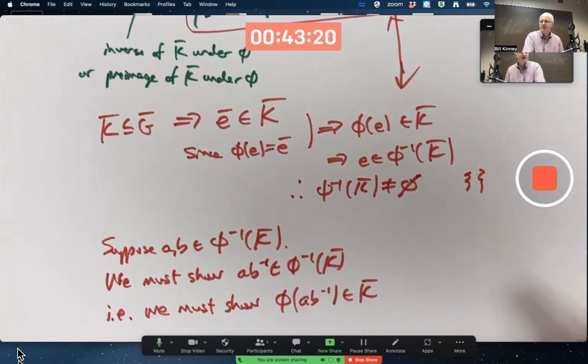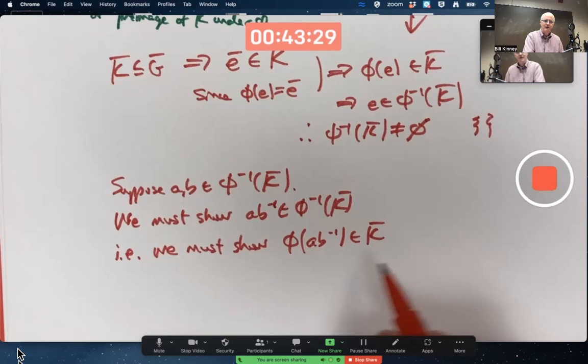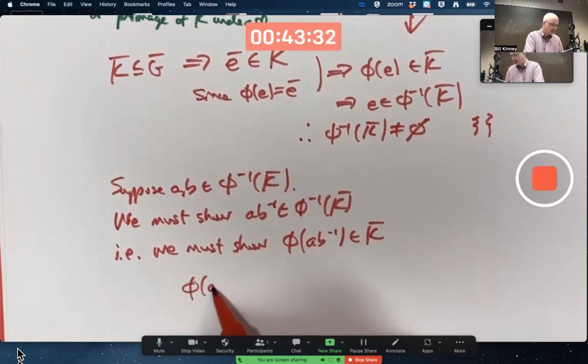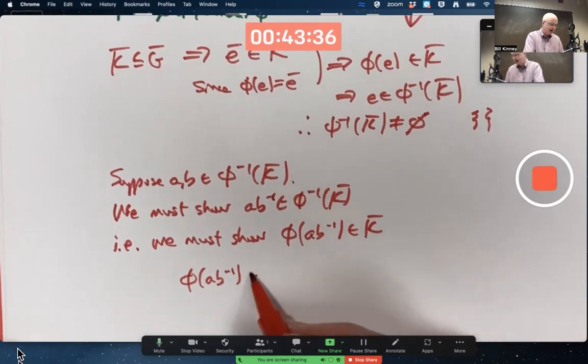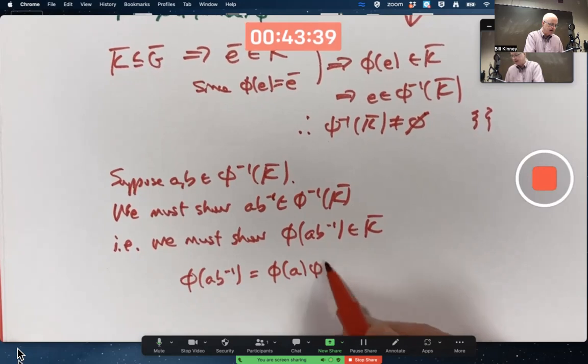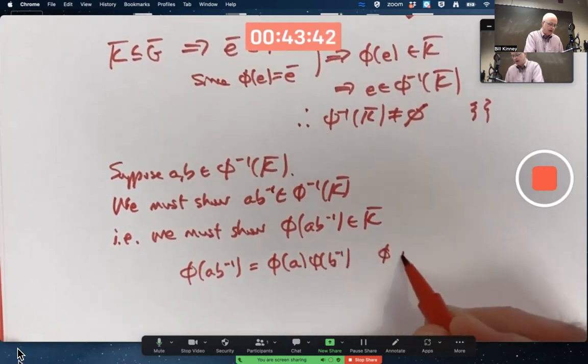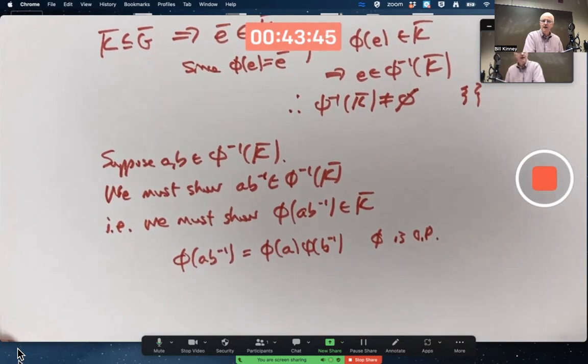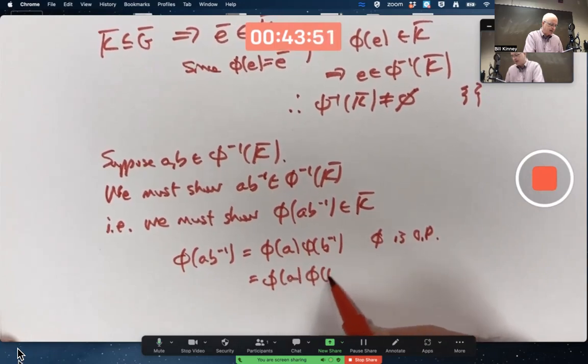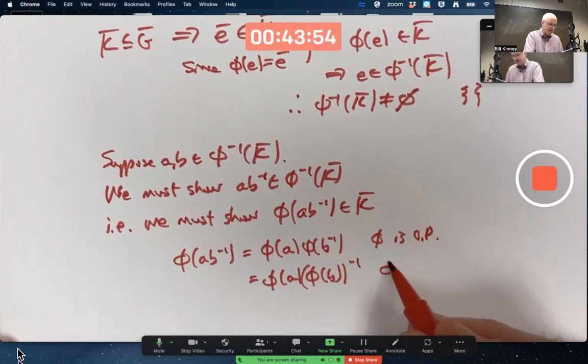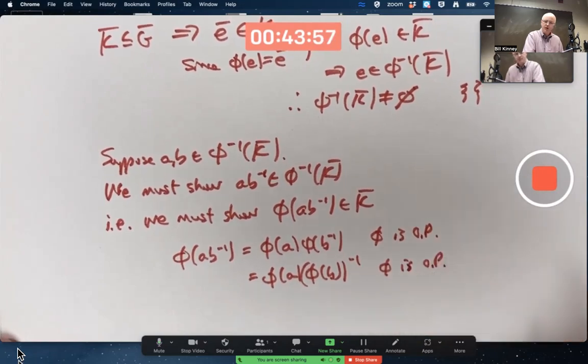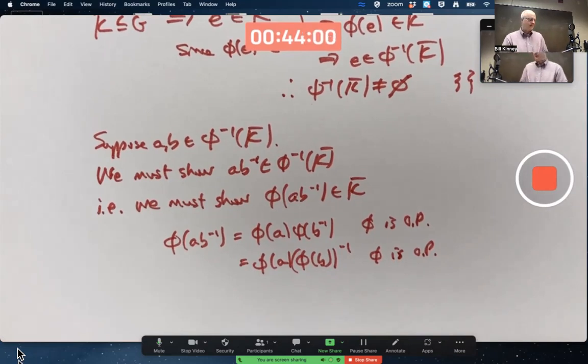Once again, the fact that φ is operation preserving, it is an isomorphism, must be relevant. It's got to be. Got to be used. Use it right here. What would this imply? Let's think about what φ of A B inverse is. By the fact that φ is operation preserving, I can write that like this. φ is OP. But then I can also factor out the inverse symbol and write this. That's also based on the fact that φ is OP. That was part of theorem 6.1.